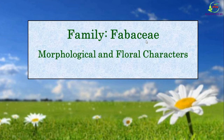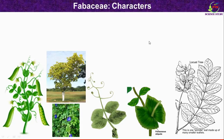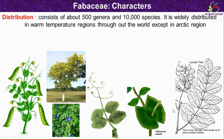In this video, we are going to concentrate on the morphological and floral characters of Fabaceae family. Regarding distribution, Fabaceae family consists of about 500 genera and 10,000 species. It is widely distributed in warm temperate regions throughout the world, except in the Arctic regions.